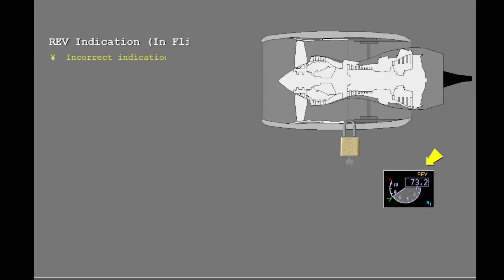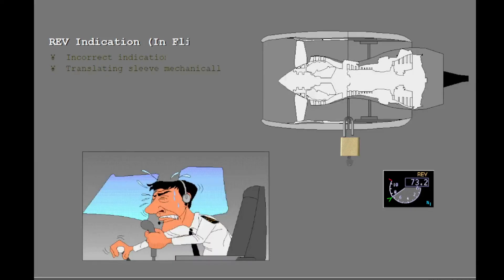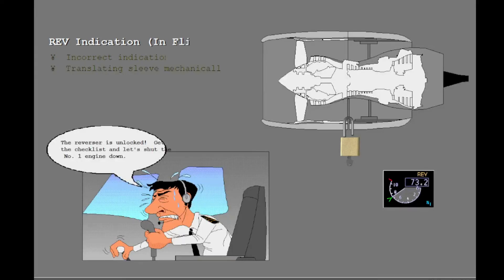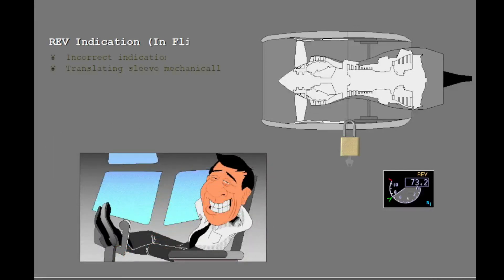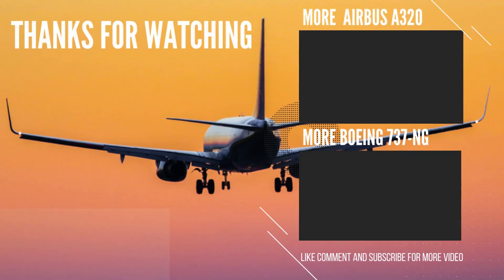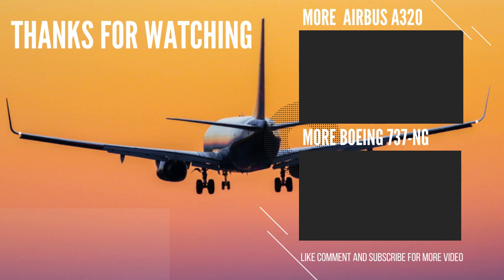If the reverser indication illuminates in-flight, the indication is incorrect or a translating sleeve is mechanically unlocked. If a translating sleeve has mechanically unlocked, the forward thrust lever may be restricted and the unstowed sleeve can produce some yaw or buffet — the affected engine must be shut down. If the forward thrust lever is not restricted and no buffet or yaw exists, the reverser indication is incorrect and the affected engine can be operated normally.